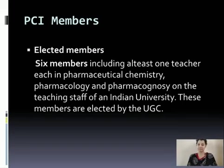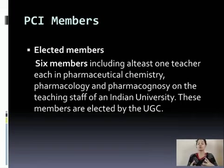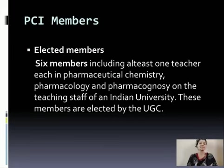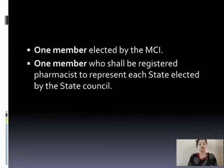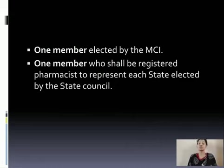Talking about elected members, there are six members including at least one teacher each in Pharmaceutical Chemistry, Pharmacology, and Pharmacognosy on the teaching staff of an Indian University. These members are elected by the UGC, that is the University Grants Commission. One member should be elected by MCI, that is the Medical Council of India. And one member should be a registered pharmacist who represents each state, elected by the state council.